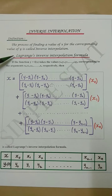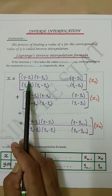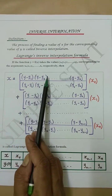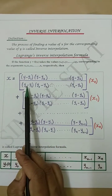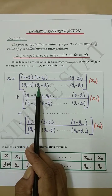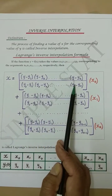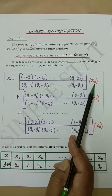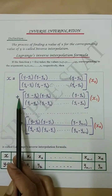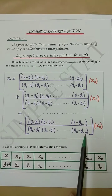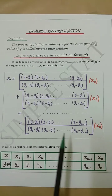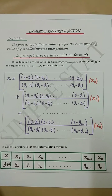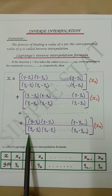The formula is called Lagrange's inverse interpolation formula, given by: x equals (y - y1)(y - y2)...(y - yn) divided by (y0 - y1)(y0 - y2)...(y0 - yn) multiplied by x0, plus similar terms for each node, up to the last term multiplied by xn. Note that this formula is obtained by simply interchanging x and y in Lagrange's interpolation formula.